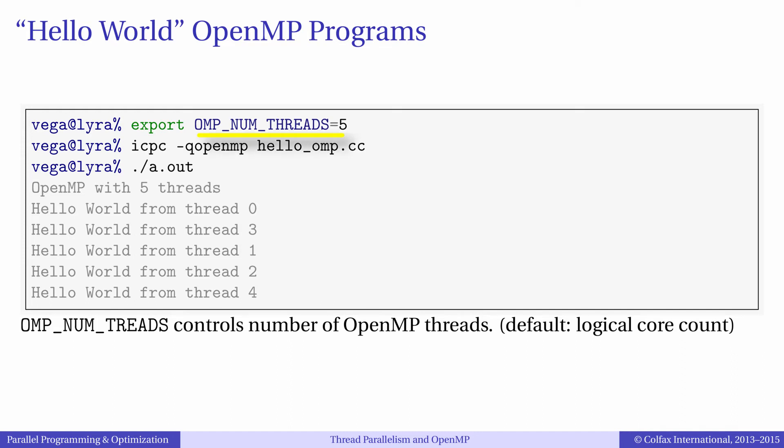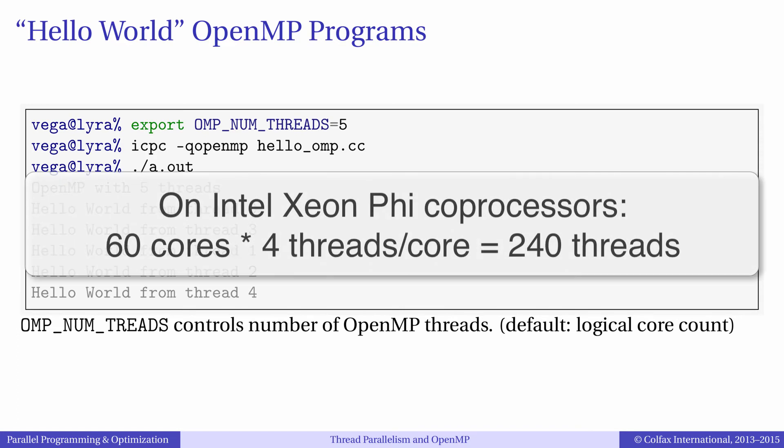If this variable is not set, the number of threads will be set equal to the number of logical cores in the system. For example, on a 60-core Intel Xeon Phi coprocessor, the default number of OpenMP threads is 240.